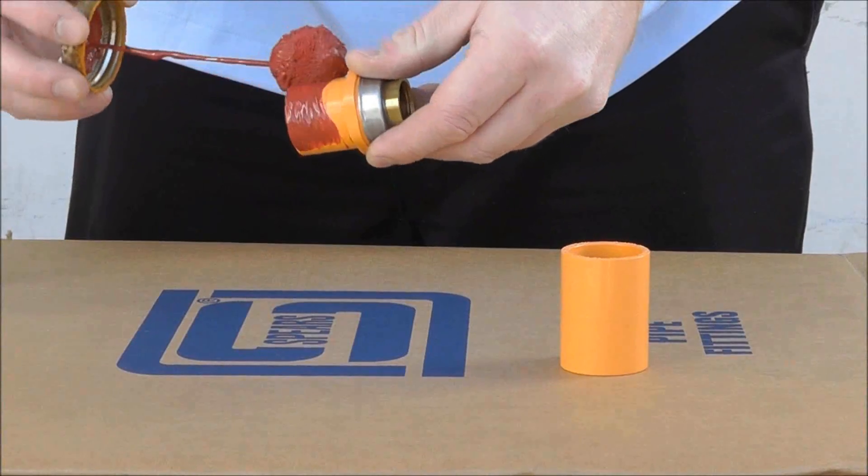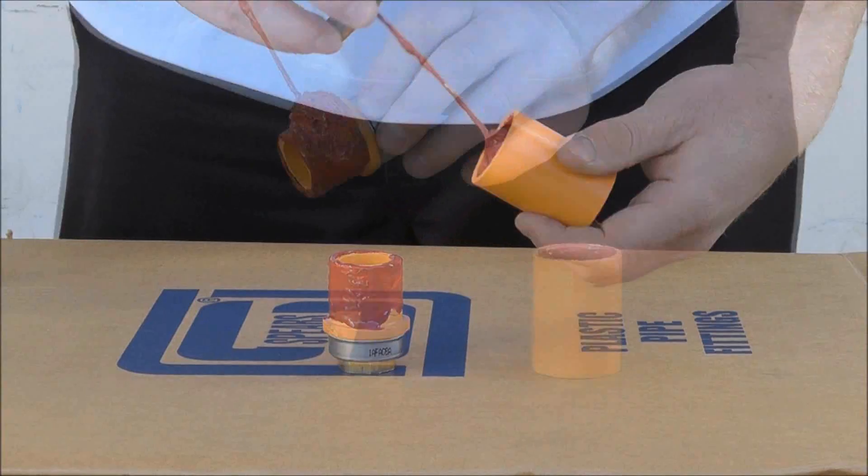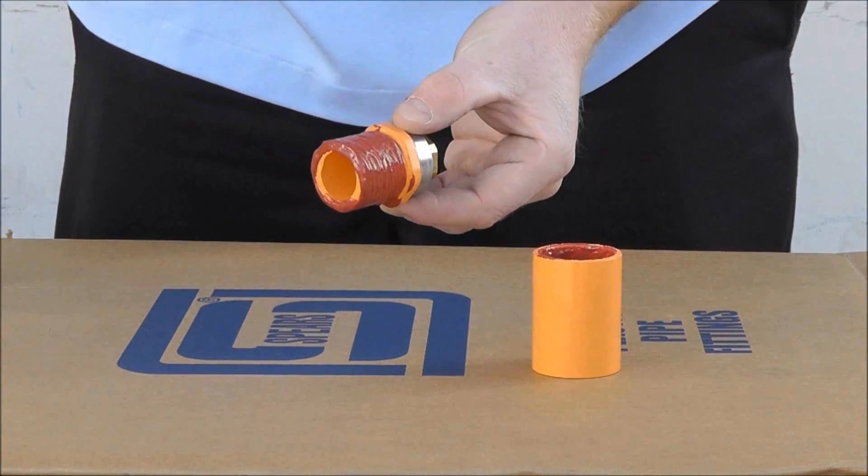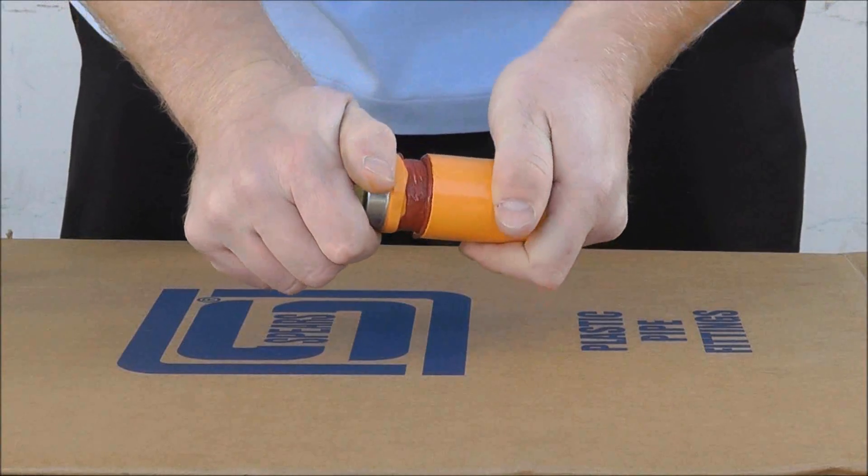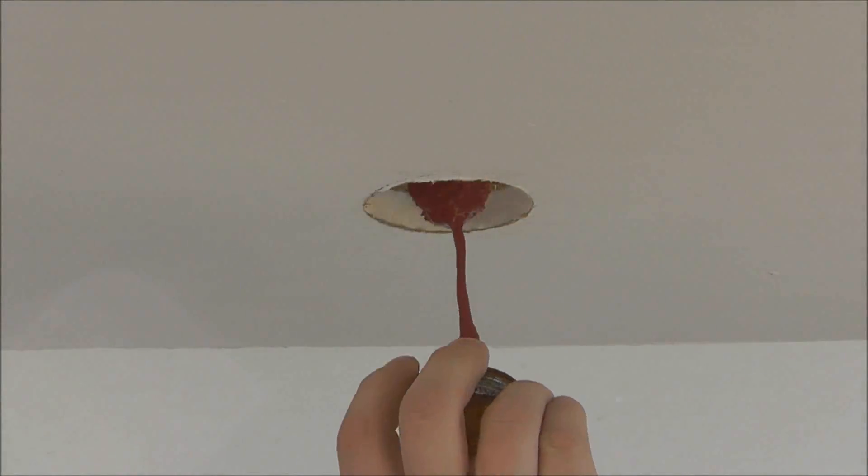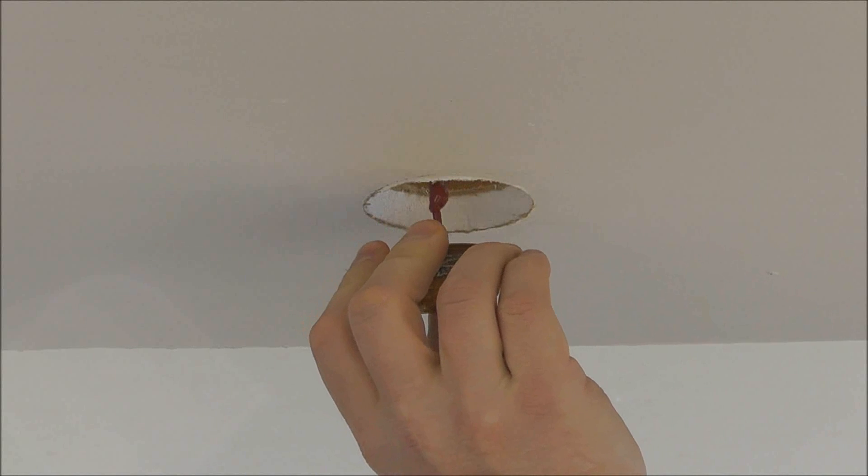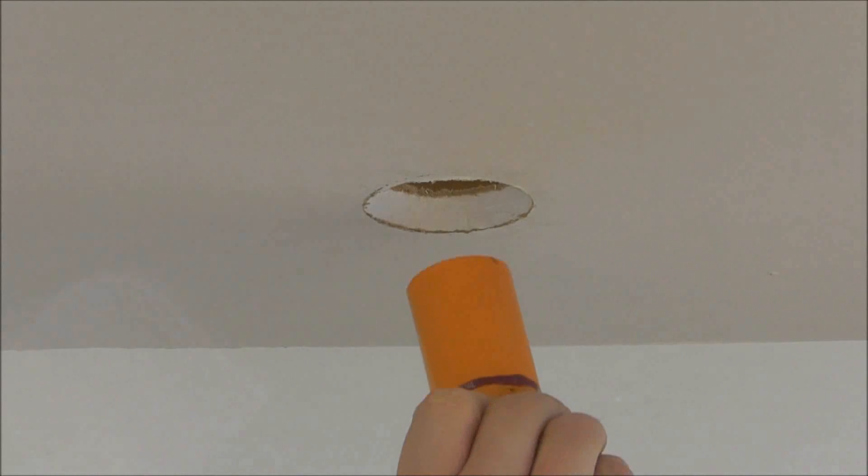Now using the Spears FS-5 solvent cement, cement the coupling and the spigot head adapter together. Make sure the fire sprinkler drop is clean then apply solvent cement. Also apply solvent cement to the 1 inch coupling and then attach the coupling to the fire sprinkler drop.